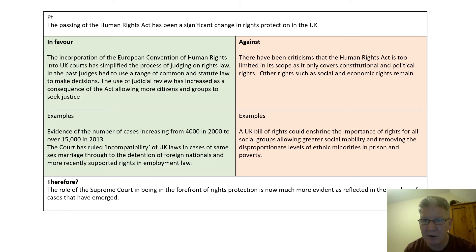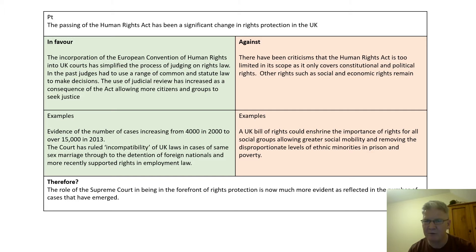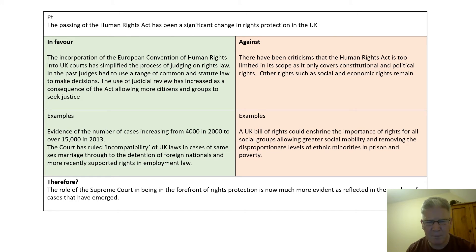However, you've got to be aware that perhaps this isn't enough, and it has been argued that the Human Rights Act is a little too limited in scope. Other social and economic rights remain relevant. A UK Bill of Rights could enshrine the importance of rights for all social groups, allowing greater social mobility and removing disproportionate levels of ethnic minorities both in prison and in poverty. Overall though, I would argue that the role of the Supreme Court being at the forefront of rights protection is now much more evident as a result of the Human Rights Act being put in place.